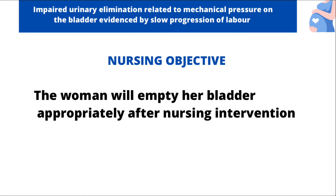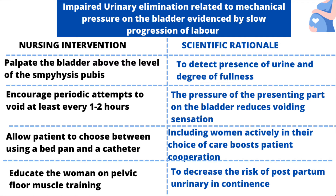The next diagnosis is impaired urinary elimination related to mechanical pressure on the bladder, evidenced by slow progression of labor. Our objective is that the woman will empty her bladder appropriately after nursing intervention. For our first intervention, we're going to palpate the bladder above the level of the symphysis pubis. The rationale is to detect the presence of urine and determine the degree of fullness. Next, encourage periodic attempts to void at least every one to two hours, because the pressure of the presenting part on the bladder reduces voiding sensation.